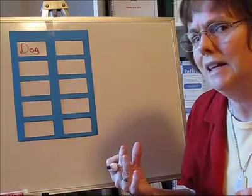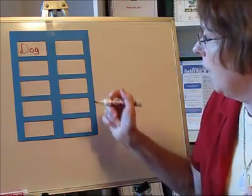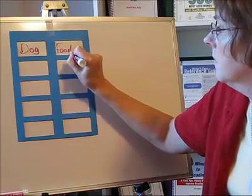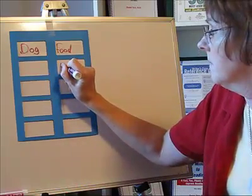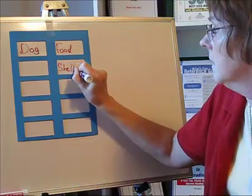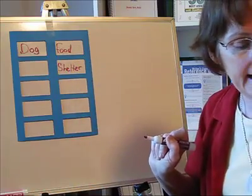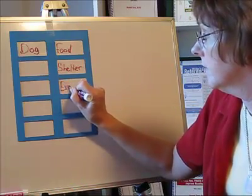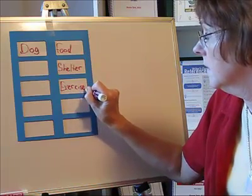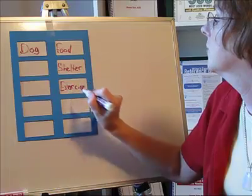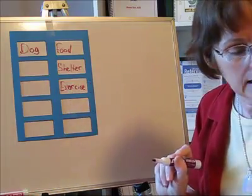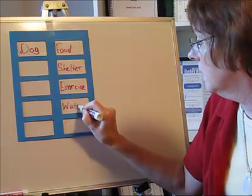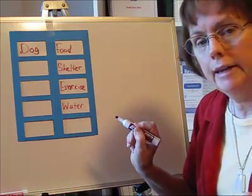What kinds of things can we write about a dog? For instance, what does the dog need? What are the dog's needs? Well, the dog needs food. And the dog needs shelter. And a dog needs exercise. And a dog needs water.